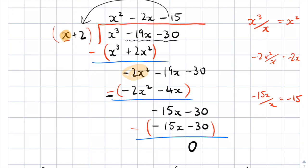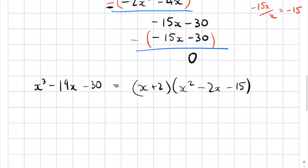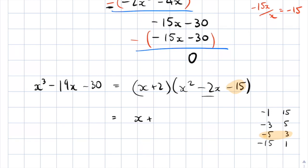We wouldn't usually stop there — we also factorize the quadratic. We look for factors that multiply to make 15 and add to make negative 2. Checking pairs: negative 3 times 5 gives negative 15 but adds to 2; negative 5 times 3 adds to negative 2. That works. So the full factorization is x plus 2 times x minus 5 times x plus 3.